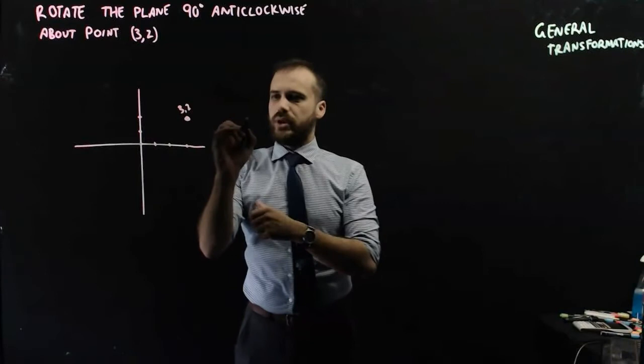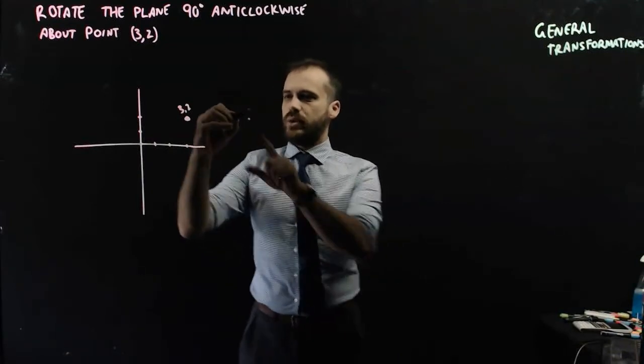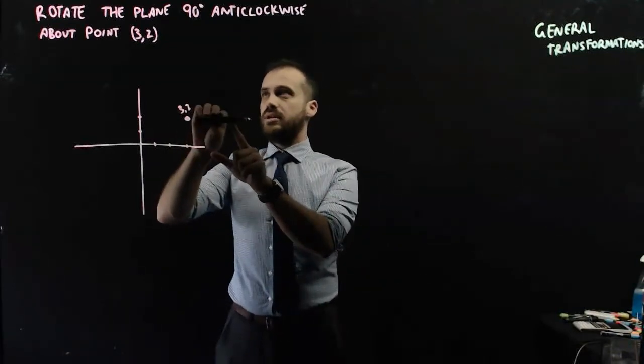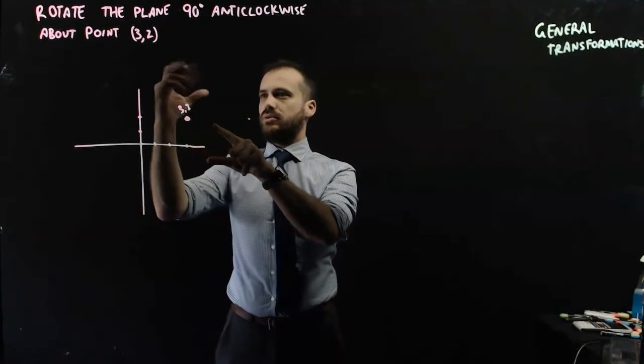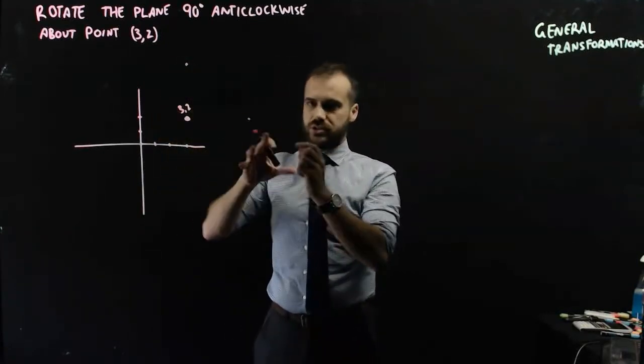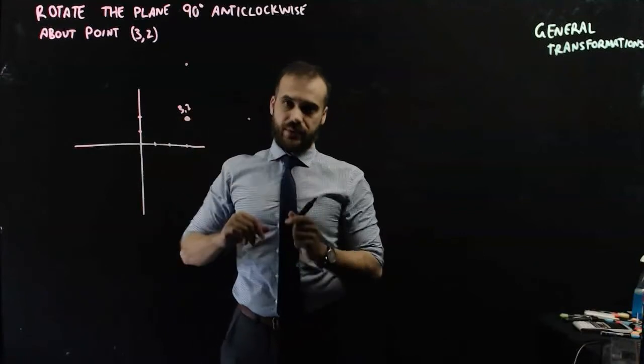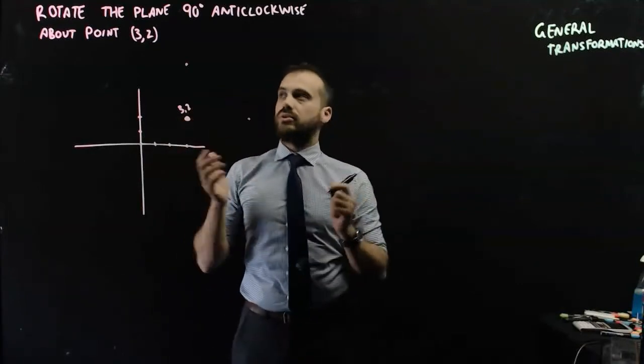So if a point was, say, here, we would rotate that point 90 degrees anticlockwise. And we need to come up with some matrix transformations to make that happen. All right, so how are we going to do it?